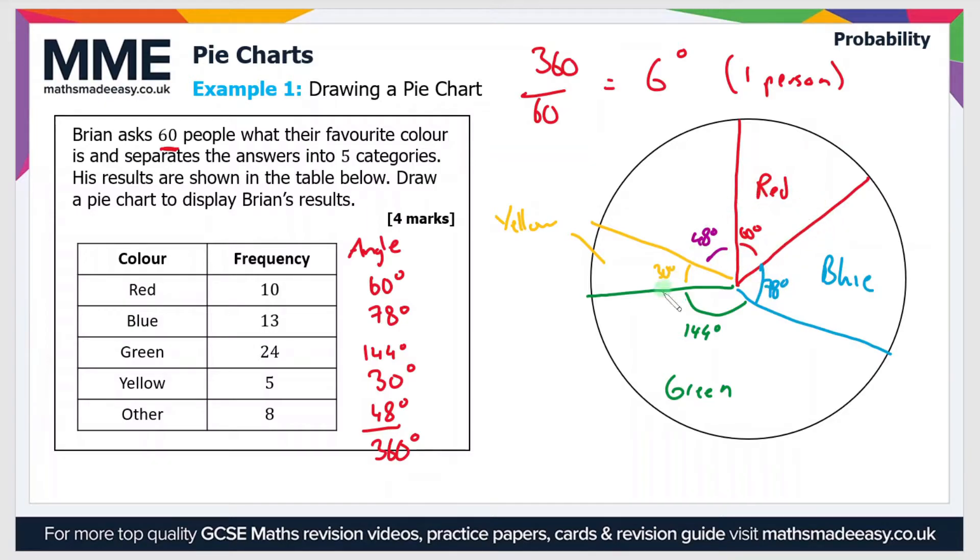And then finally the other category should be an angle of 48 degrees there. So obviously I've not used a protractor so my answer is not particularly accurate. But your completed pie chart should look something like this.